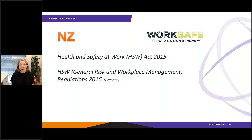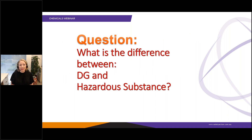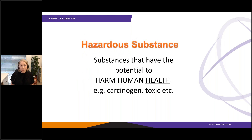Now that I've told you what the main laws are called, it's important to understand which chemicals are covered by those different laws. Let me explain the difference between DGs — dangerous goods — and hazardous substances. In Victoria we use the term hazardous substance. A hazardous substance is a substance that has the potential to harm human health — something that could cause harm in the long term, such as a chemical that could cause cancer, or in the short term, such as being immediately toxic or causing damage to skin.